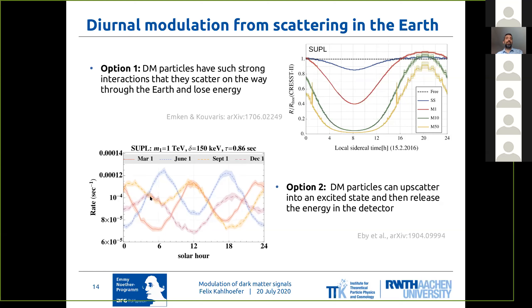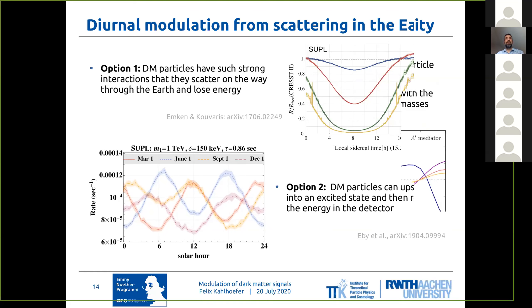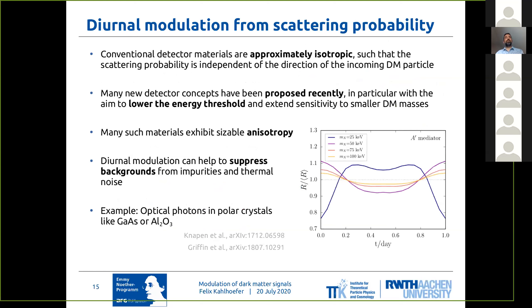And you actually see something interesting in this plot, which is that in contrast to the annual modulations, the peak of the daily modulation isn't fixed at all — this could even vary over the course of a year, depending on the overall orientation of the laboratory to the wind. The second possibility for a diurnal modulation is from the scattering probability itself, meaning that the differential event rate becomes time dependent. This isn't the case for conventional detector materials because those are approximately isotropic, meaning that the scattering probability is independent of the direction of the incoming dark matter particle.